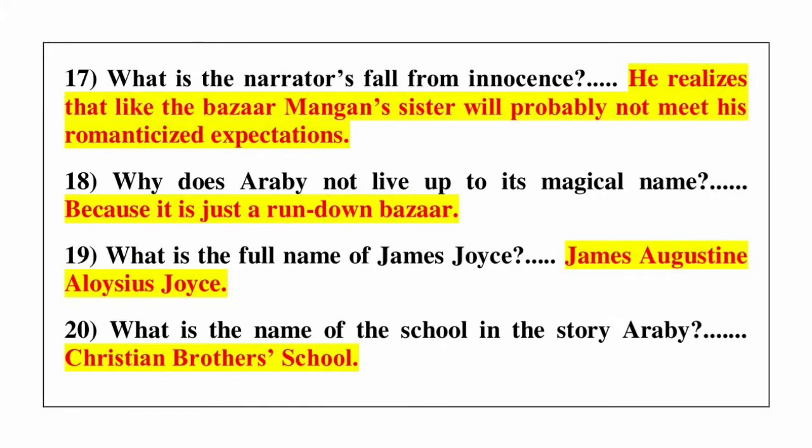Question number 17: what is the narrator's fall from innocence? Answer is he realizes that like the buzzer, Mangan's sister will probably not meet his romanticized expectations. Question number 18: why does Arabi not live up to its magical name? Answer is because it is just a rundown buzzer.